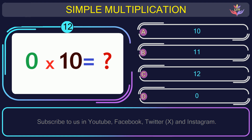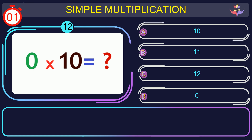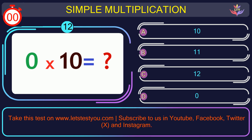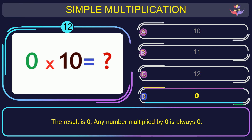Question number 12: find the result when you multiply 0 by 10. The correct answer is option D.